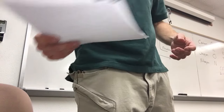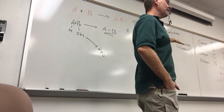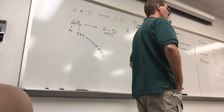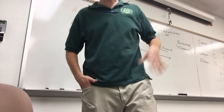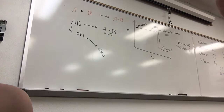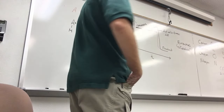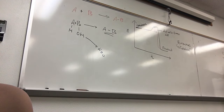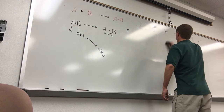Enzymes lower the activation energy and make chemical reactions happen more efficiently. They don't make reactions occur spontaneously on their own — they just lower the barrier. Enzymes are actually proteins for the most part, and the body produces them. Now let's talk about acids, bases, and water.